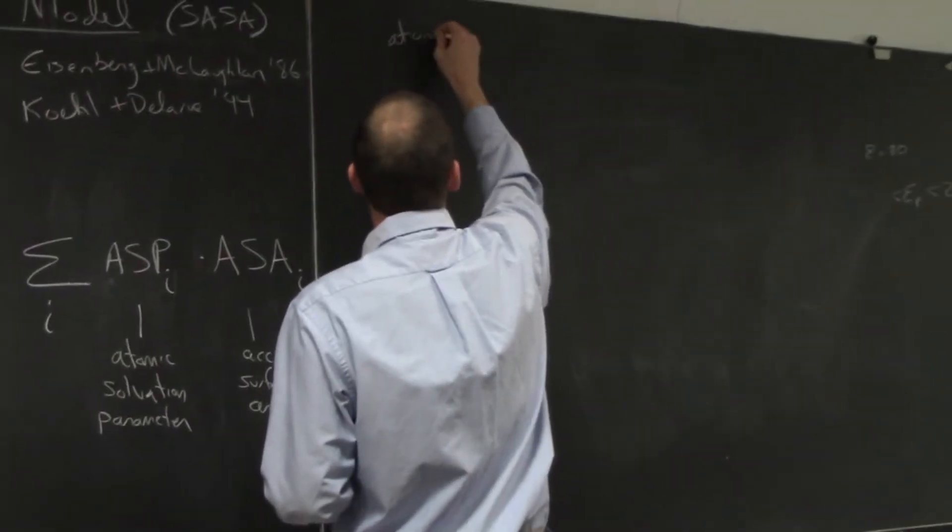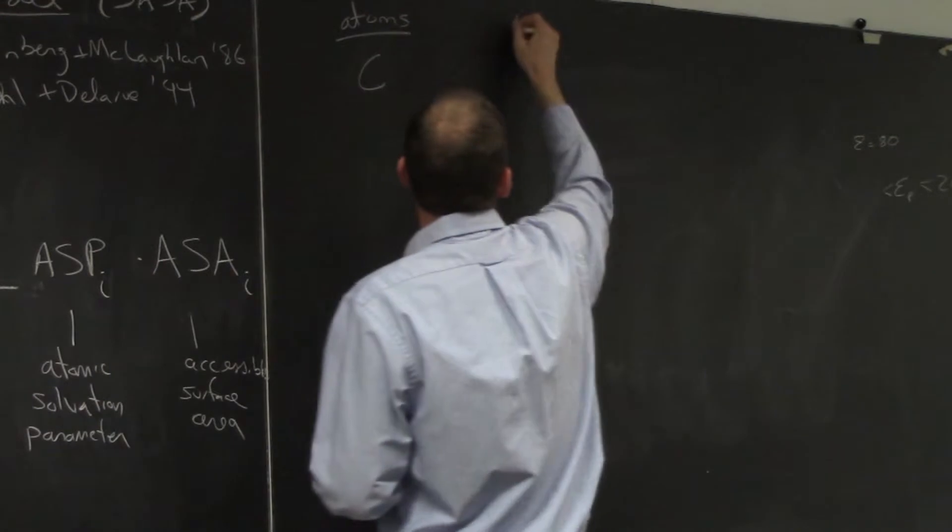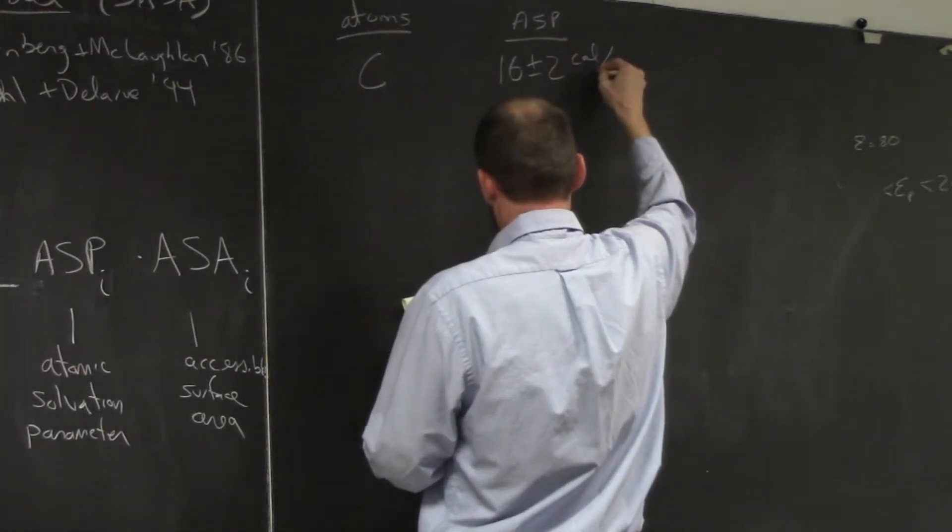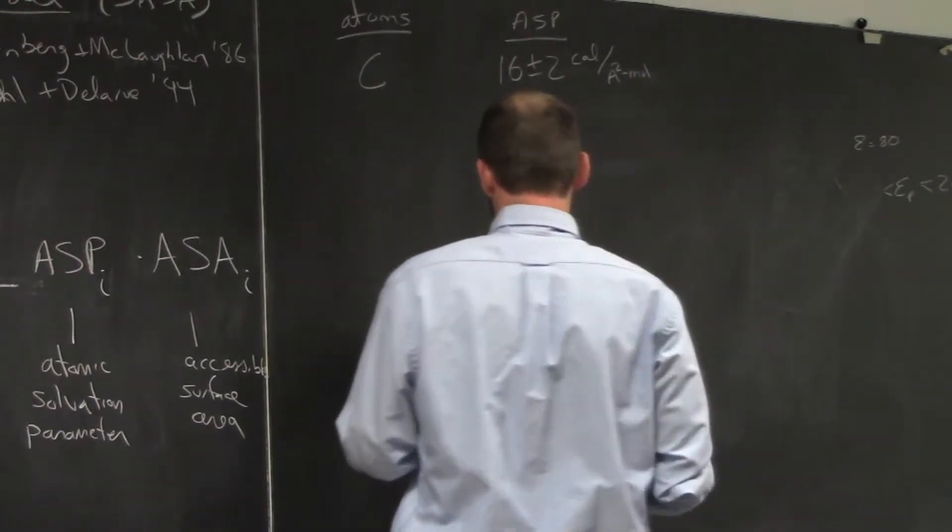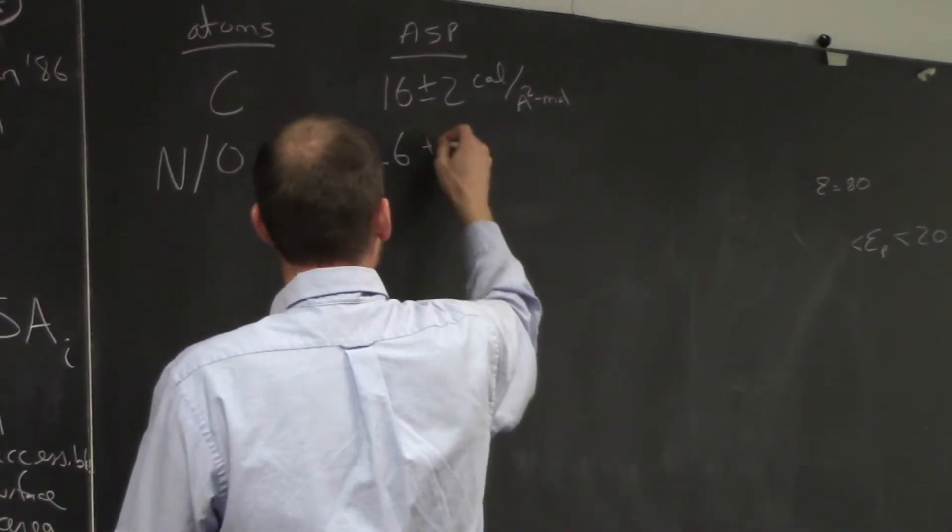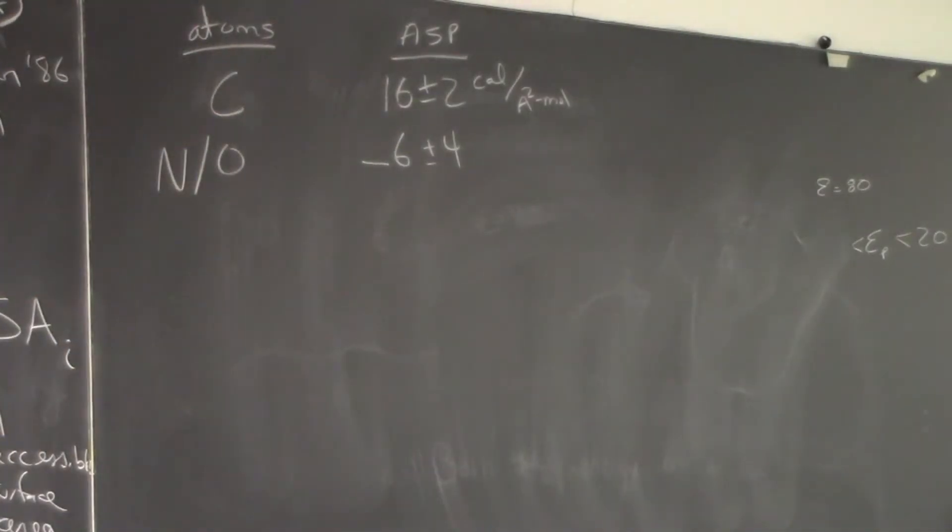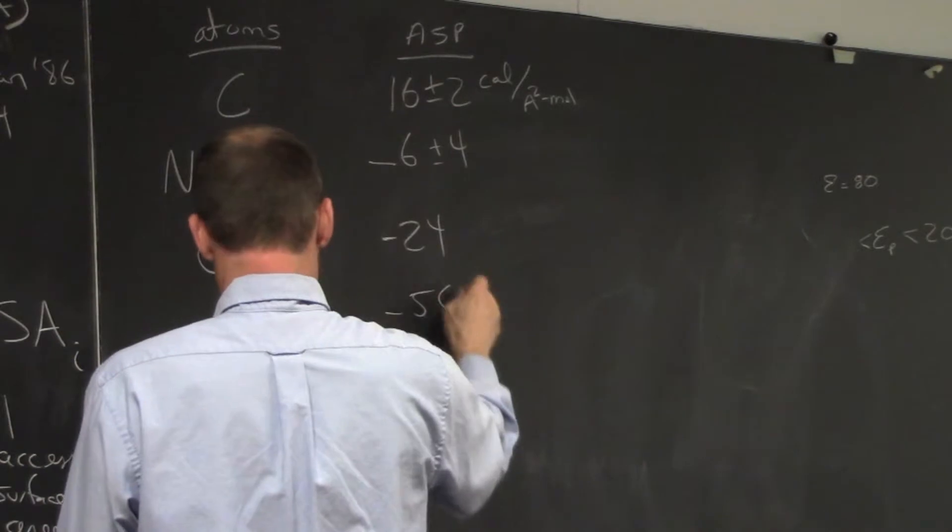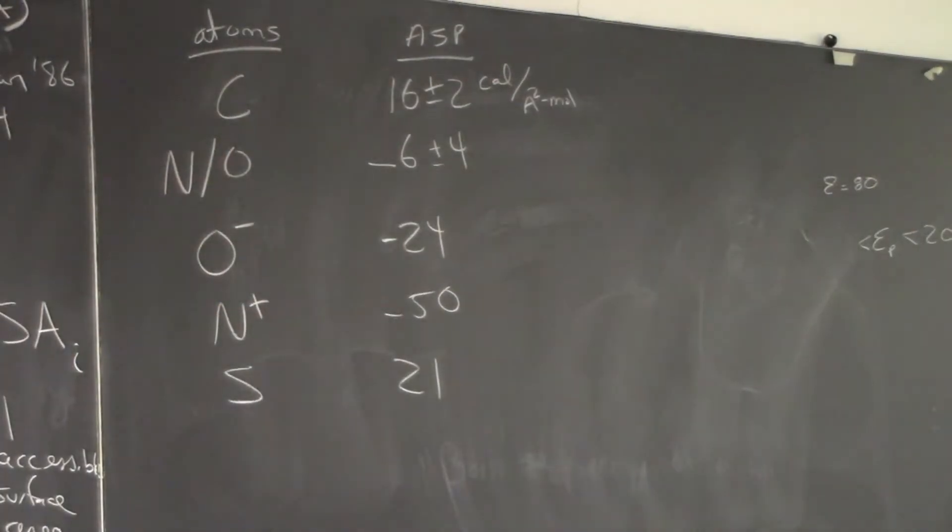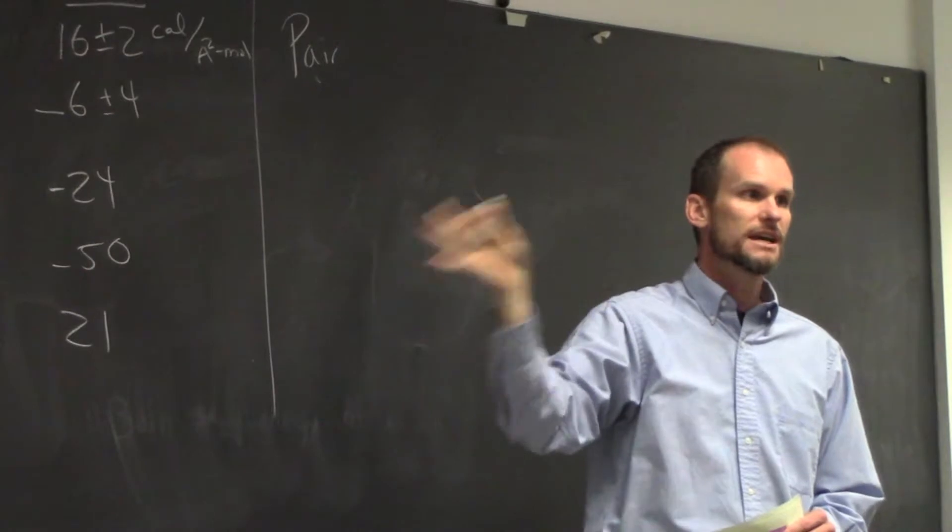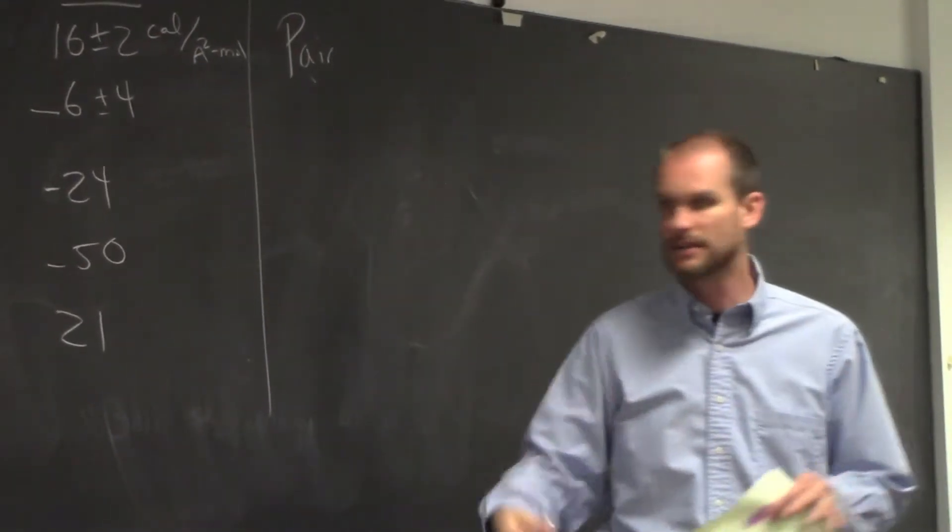If we look at the numbers, if we look at atoms, the atomic solvation parameter. So carbon is 16 plus or minus 2 calories per angstrom squared per mole. This is coming from the Koehl and Delarue. There's nitrogen and oxygen minus 6 plus or minus 4 for a neutral nitrogen or oxygen. So a charged oxygen minus 24, charged nitrogen minus 50 and sulfur is hydrophobic. So back to 21, a positive value. So the negative values, those want to be exposed to solvent. The positive values do not want to be exposed to solvent. So this is one algorithm we use in Rosetta. Typically we don't use that until the end of a calculation because it's slower. We want to save that for the end. During a calculation we need something fast.